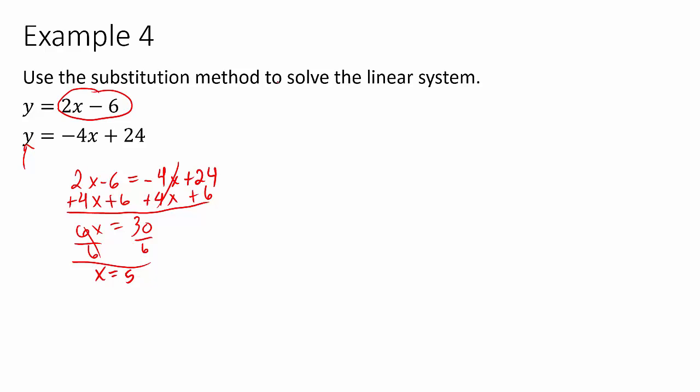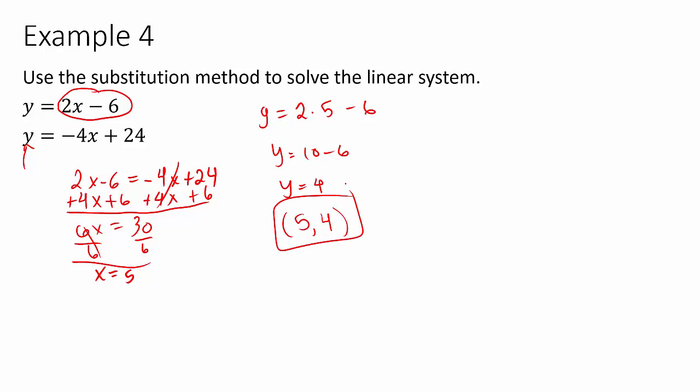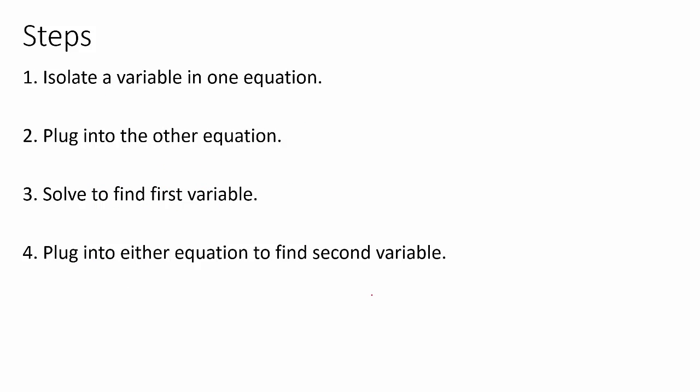Now it doesn't matter which equation we plug x equals 5 into because both are solved for y. The top equation has smaller numbers so that's the preference: 2 times 5 minus 6 is 10 minus 6, which is 4. So the answer is the point 5 comma 4. To summarize the steps for substitution: isolate a variable in one equation, plug that into the other equation, solve for the first variable, then plug that back in to find the second variable.